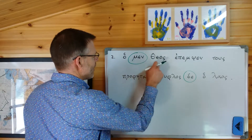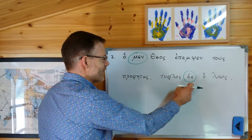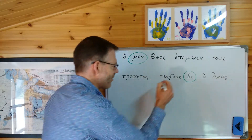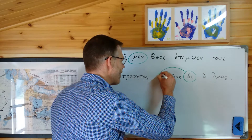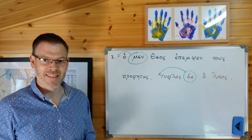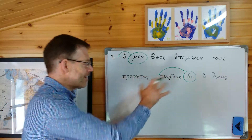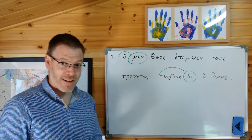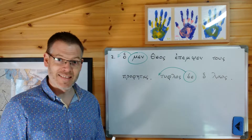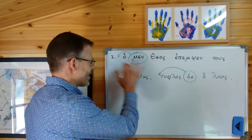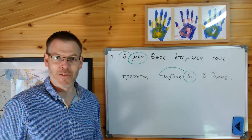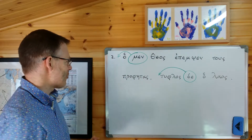Ho men theos, tu de typhlos holos laos. Being post-positive, when we translate them we're going to move them back one step in the sentence. What I'm going to do now is read this and translate it, then show you how to translate men and de at the end. First, let's ignore men and de and just translate the rest of the sentence.